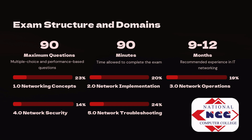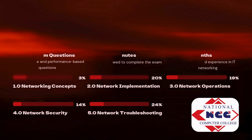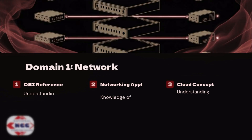Here's how the exam is broken down: Domain 1, Networking Concepts, is 23%. Domain 2, Network Implementation, is 20%. Domain 3, Network Operations, is 19%. Domain 4, Network Security, is 14%. And Domain 5, Network Troubleshooting, is 24%. You'll notice that troubleshooting carries the highest weight, so you need strong hands-on problem-solving skills.